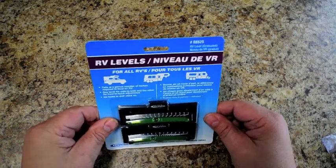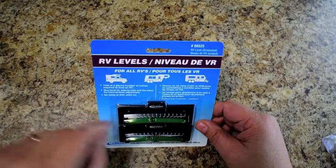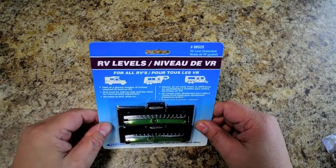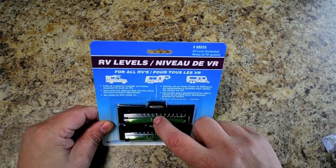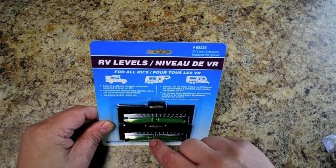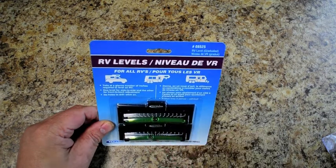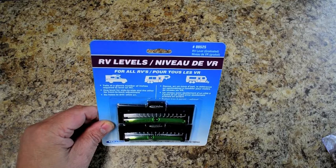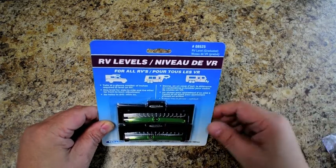Now when you're off level, each one of these graduations are supposedly one inch. So if this reads maybe one inch and this reads maybe three inches, you're supposed to add three plus one, which of course equals four, and that means that the coach is four inches out of level from the lowest point.